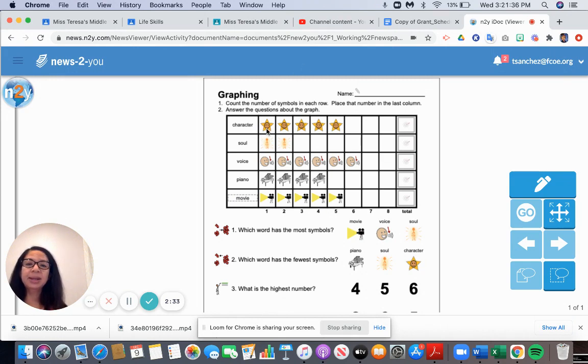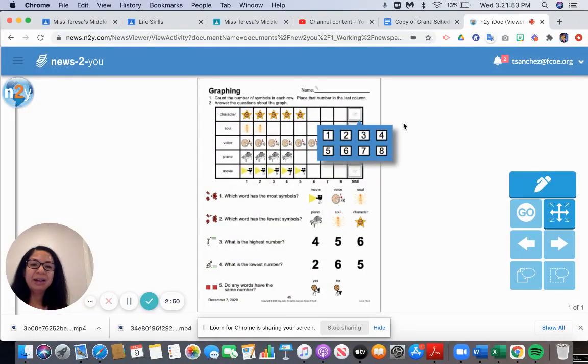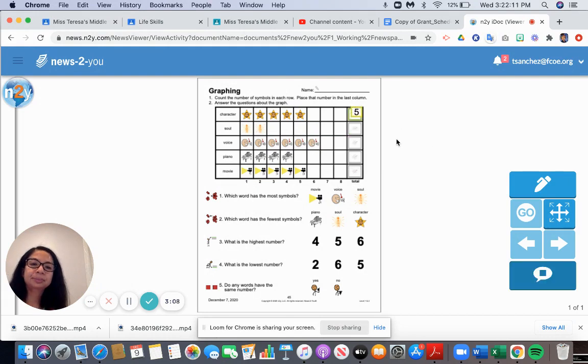First we're going to count characters. How many characters are there? Let's count. One, two, three, four, five. There are five characters. If you have the paper, you write the number five. If you are doing this activity digitally, which you can if you have access to Unique online, you can just put that number in. Five is how many characters we have.